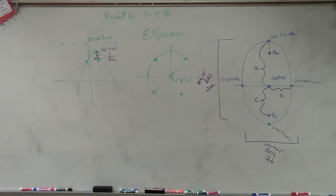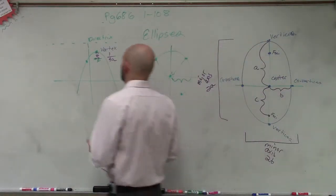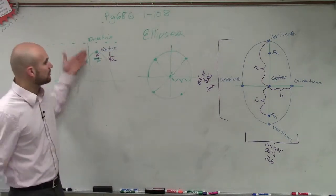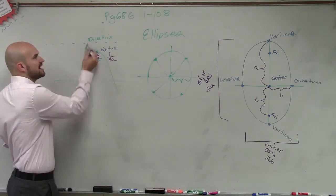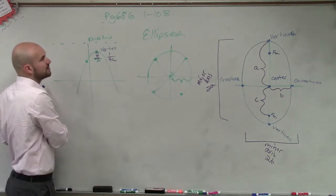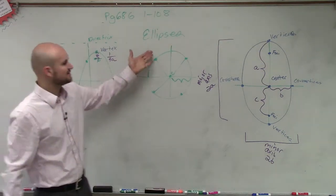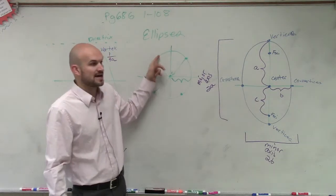All right, so what we talked about is when we have an ellipse, we talked about, ladies and gentlemen, that a parabola, the definition of a parabola was a set of points that are equal distance from the focus to the directrix. The definition of a circle was equal distance from the center to any point.